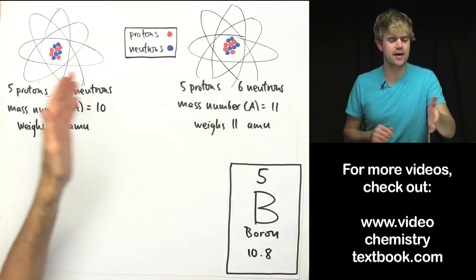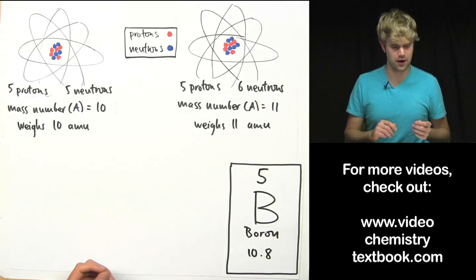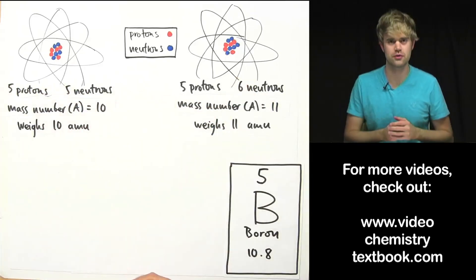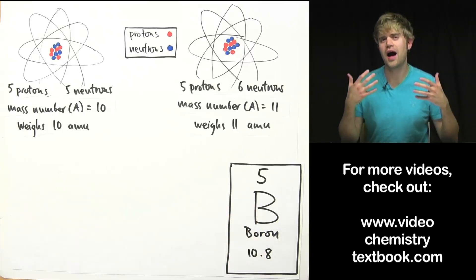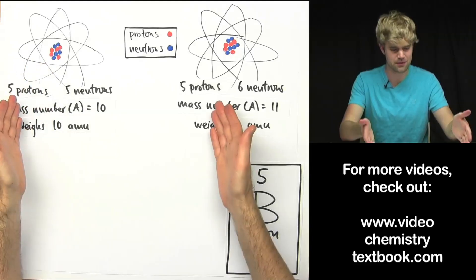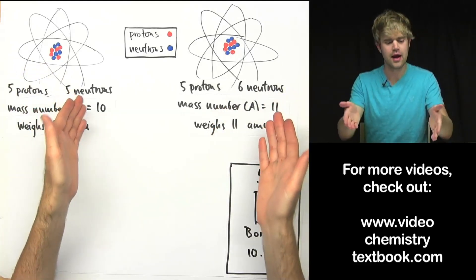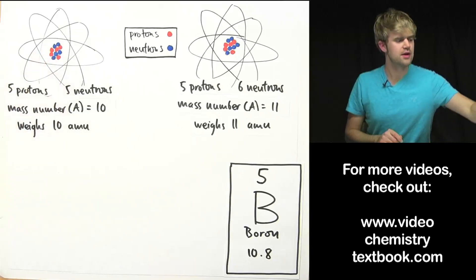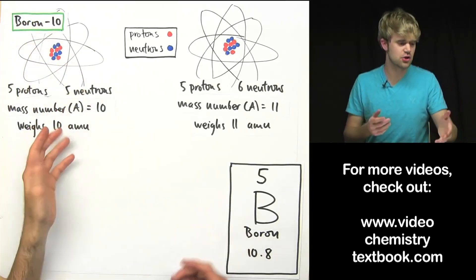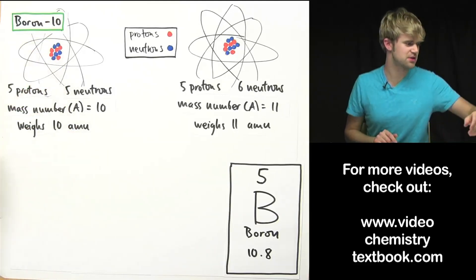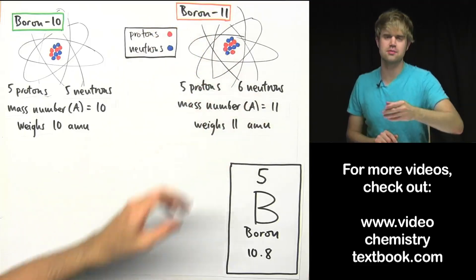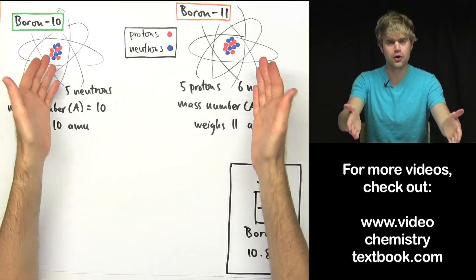So these two atoms are both different versions of boron, different versions of boron that have a different number of neutrons but the same number of protons. We call these isotopes. Isotopes are like different versions of an atom that have the same number of protons but differ in their number of neutrons. So this atom over here we call it boron-10, that's its isotope name because the mass number is 10 and this one over here is boron-11 because it has a mass number of 11. So two versions of boron.